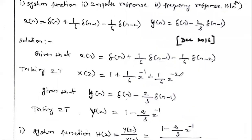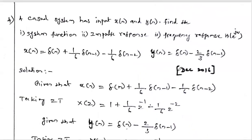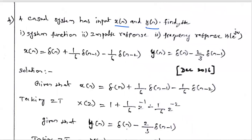Welcome to my channel. Today we are going to solve one interesting problem related with the Discrete Time Fourier Transform — the use of DTFT in system analysis. The question is: a causal system has input x(n) and output y(n). Find the system function.